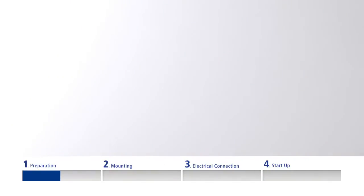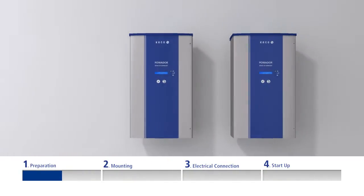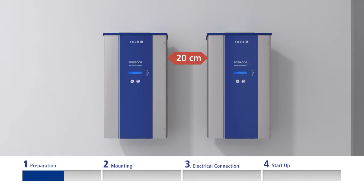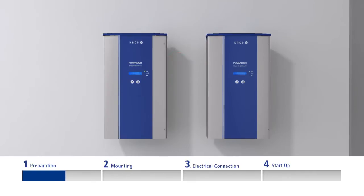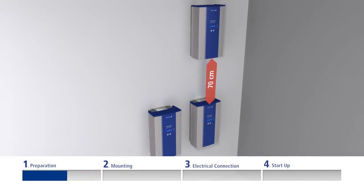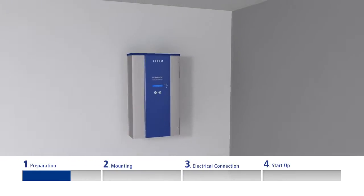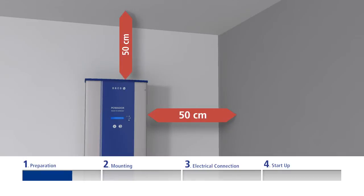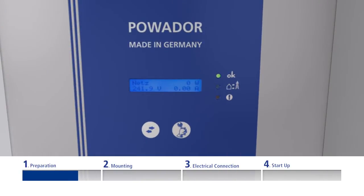Maintain the following minimum clearances around the unit: 20cm between inverters mounted side by side, 70cm between inverters mounted above each other, 50cm to the floor or ceiling, to shelves, cabinets or similar. When arranging the inverters, please also ensure that the inverter displays will be clearly visible afterwards.